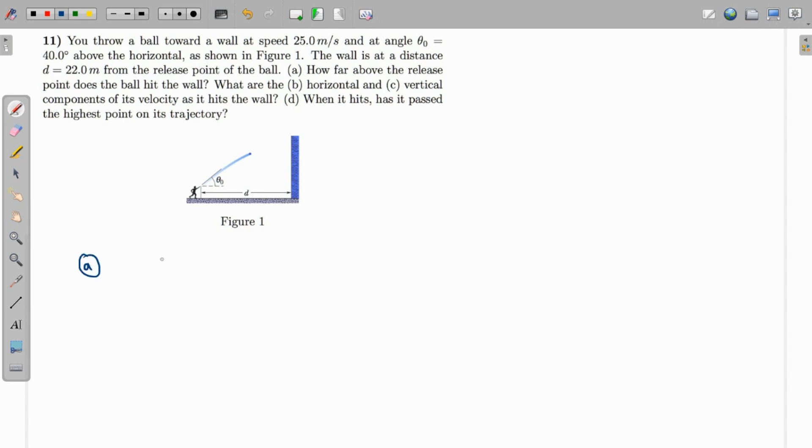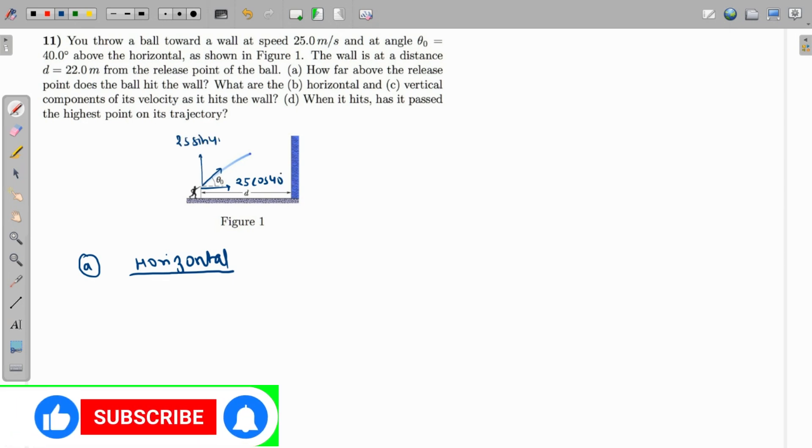let's find the time of flight. If we analyze this using horizontal motion, we already know the horizontal distance, and since there is no horizontal acceleration, the speed is constant. So the horizontal speed is 25 cosine of 40 degrees and the vertical speed is 25 sine of 40 degrees.